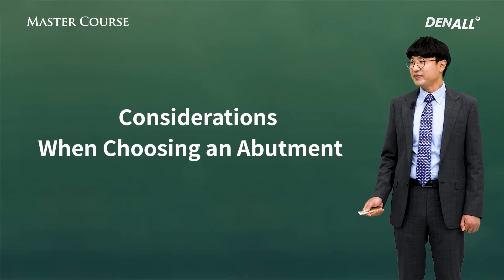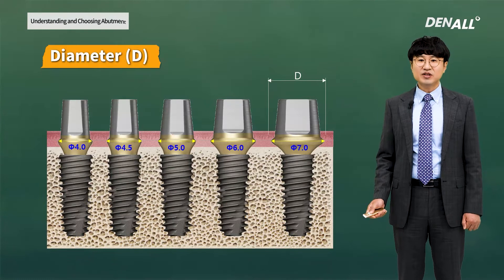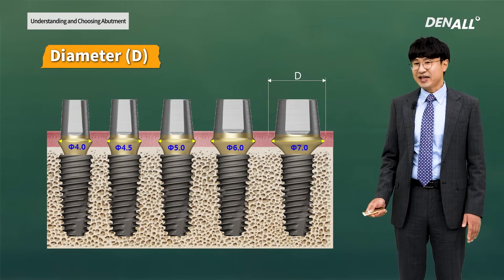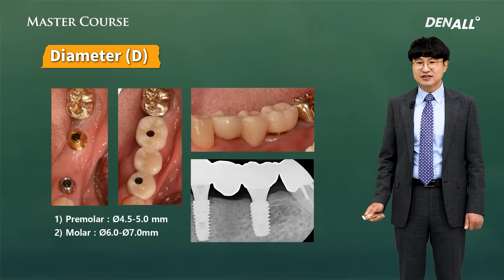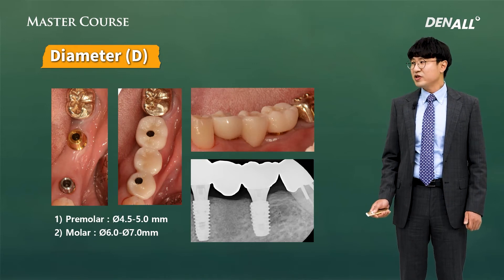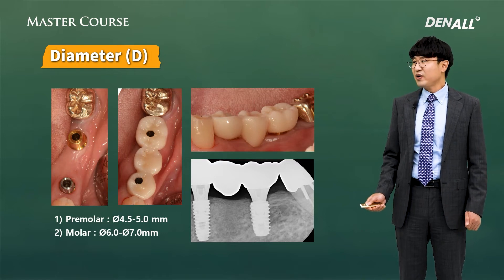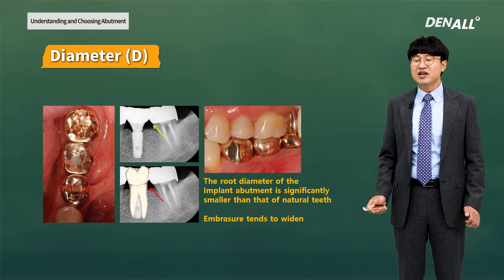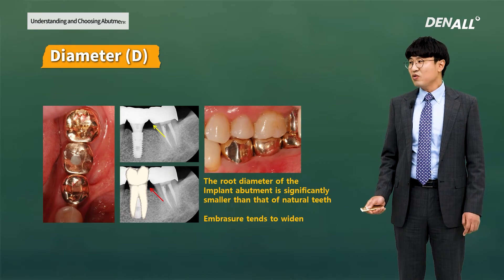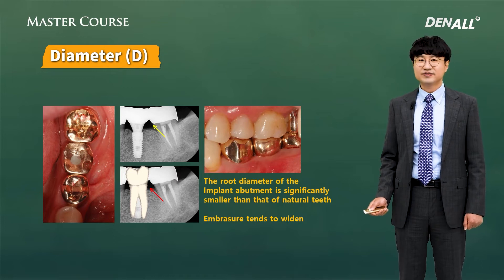When considering abutment selection, diameters range from 4.0 to 7.0 mm. Depending on the situation, a proper diameter should be chosen. For the lower anterior region, a small one would be chosen, and as you go towards the posterior region, a wider diameter abutment would be chosen in general. For premolars, I usually use 4.5 to 5.0 mm, and for molars, I usually use 6.0 to 7.0 mm. The root diameter of an implant abutment is significantly smaller than that of natural teeth, so the embrasure tends to widen naturally.